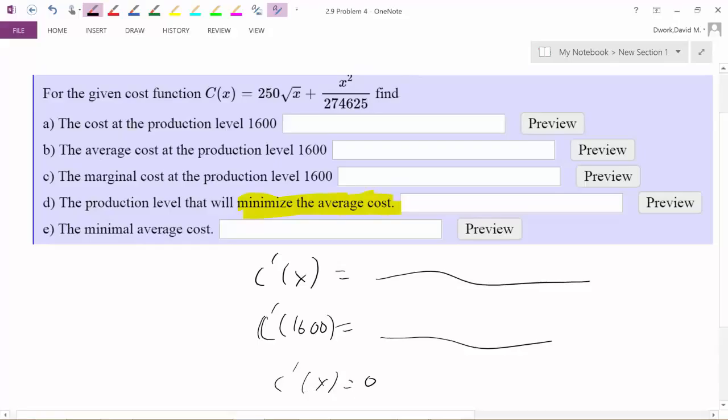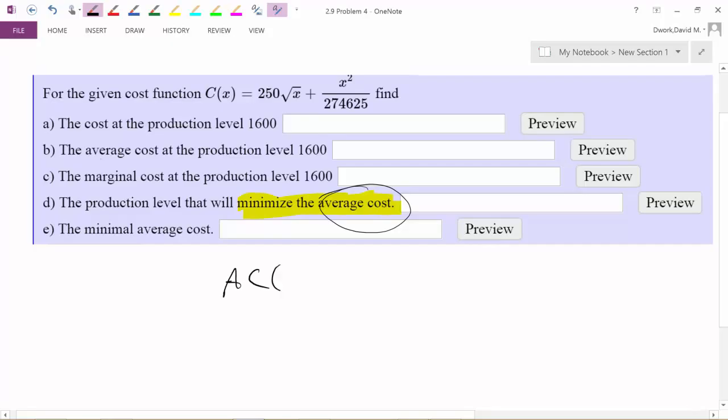But there's the trap. They didn't ask for the minimum cost. They asked for the minimum average cost. So therefore, before we ever take our derivative, because we don't want the derivative of the cost function, we want the derivative of the average cost function, right?